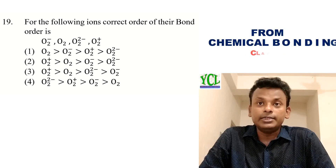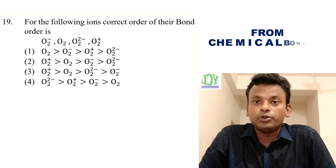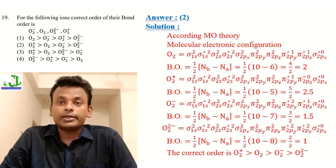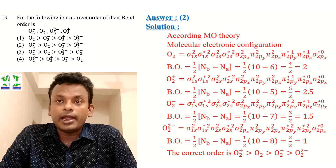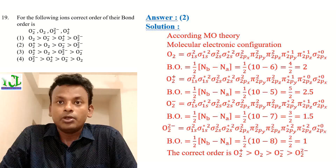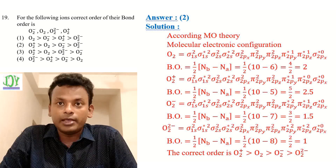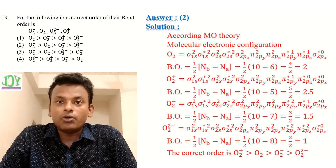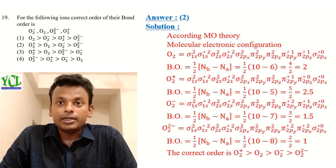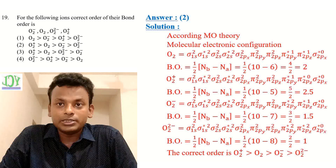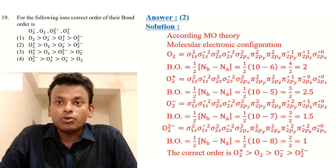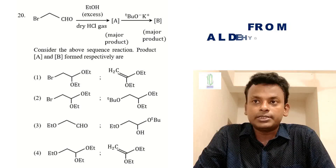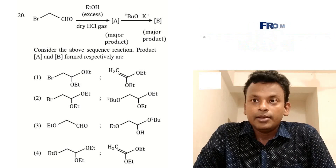Question 19: Correct order of bond order for O2⁻, O2, O2²⁻, and O2⁺. The answer is option 2. According to molecular orbital theory: O2 has bond order 2; O2⁺ (one electron removed) has bond order 2.5; O2⁻ (one electron added) has bond order 1.5; O2²⁻ (two electrons added) has bond order 1. So the correct order is O2⁺ > O2 > O2⁻ > O2²⁻.